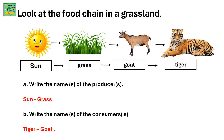Look at the food chain in a grassland: sun, grass, goat, and tiger. Write the names of the producers. In this food chain the producers are sun and grass. Write the names of the consumers. The consumers are goat and tiger.